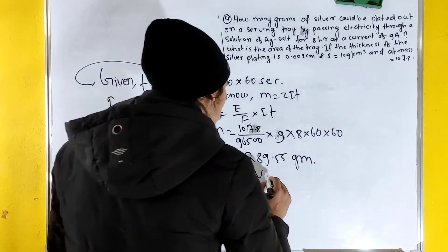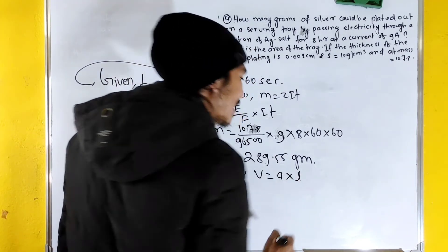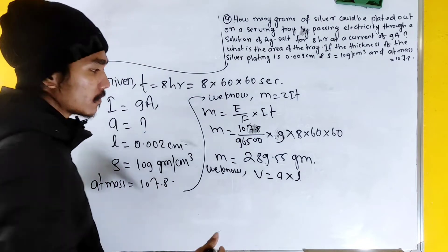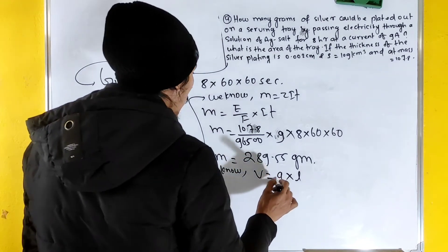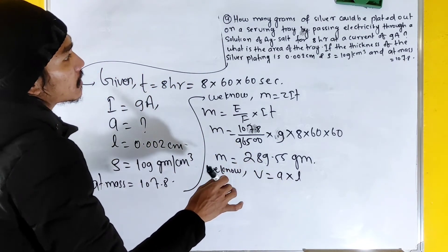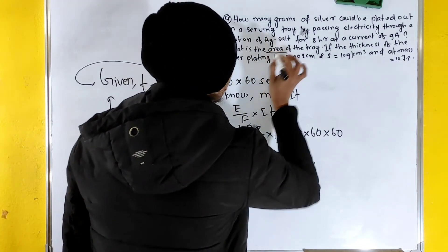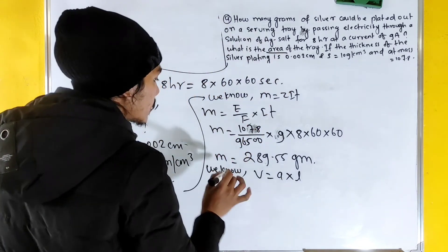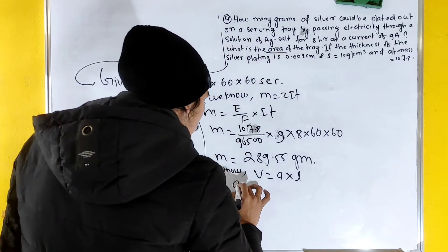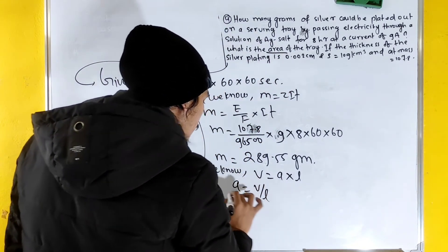Volume V equals area A into length L. So area equals V divided by L.